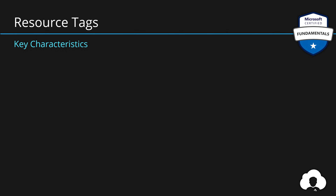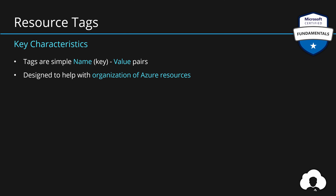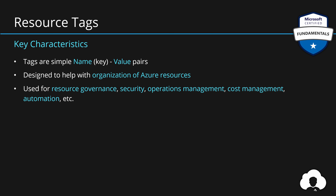To summarize, resource tags are very simple key-value pairs. You assign a tag by giving it a name and then assigning it a value. They are designed to be leveraged by other tools within Azure to help you with organization of your resources. There are plenty of scenarios where resource tags can be used, like typical resource governance, security, operations management, cost management, or even automation. It is really just simple extra information for your Azure resources, and how you leverage it is really up to you.